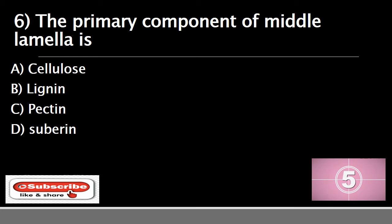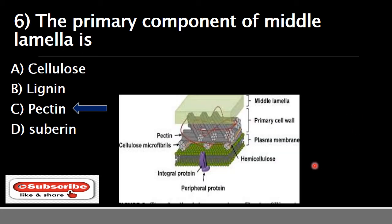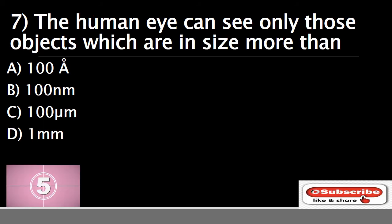Question number six: the primary component of the middle lamella is — your options are A) cellulose, B) lignin, C) pectin, or D) suberin. The correct answer is C) pectin. The middle lamella is a part of the cell wall — it is the outermost layer between the cells — and it is rich in pectin, which cements the primary cell walls of adjacent cells together.